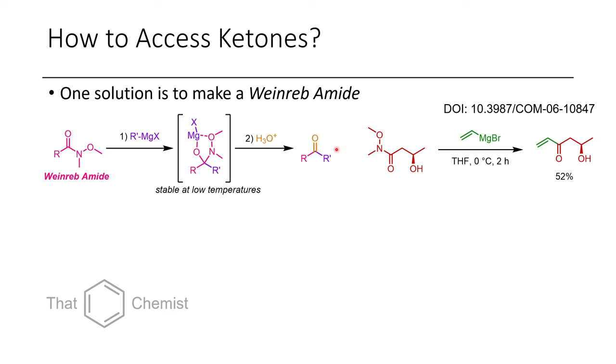Now here's one interesting example that I found in the literature, where we take this Weinreb amide, treat it with vinyl-magnesium-bromide, and we're afforded with this alpha-beta-unsaturated ketone. Now this is a useful trick to keep in your back pocket, because these things tend to be relatively unstable, but very useful synthetically.